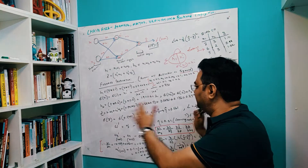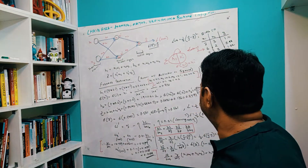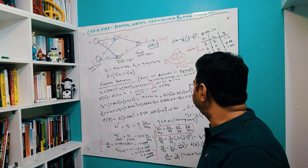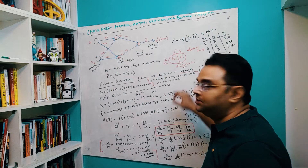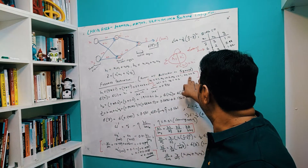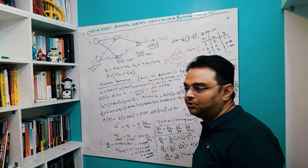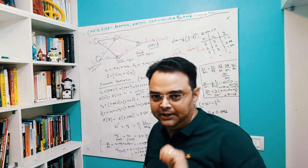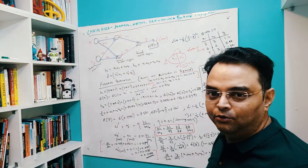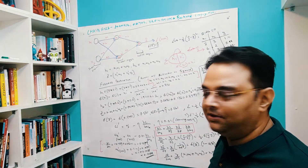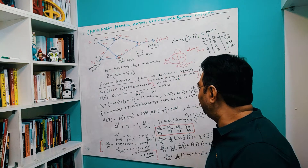The weight values are: w1 = 0.1, w2 = 0.2, w3 = 0.1, w4 = 0.2, w5 = 0.1, w6 = 0.2. It would be more fruitful if you take a pen and paper, pause the video, and try to work it out with me like a group exercise.